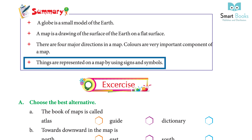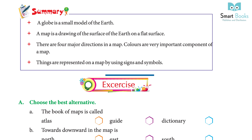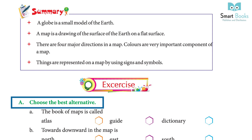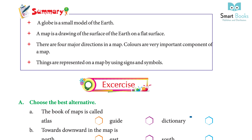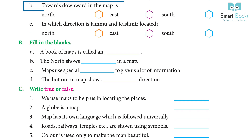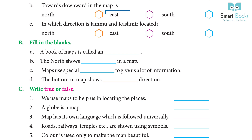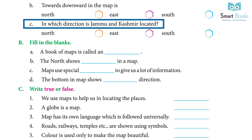Exercise A — Choose the best alternative. A: The book of maps is called — atlas, guide, or dictionary? Answer: atlas. B: Towards the downward direction on the map is — north, east, or south? Answer: south. C: In which direction is Jammu and Kashmir located — north, east, or south? Answer: north.